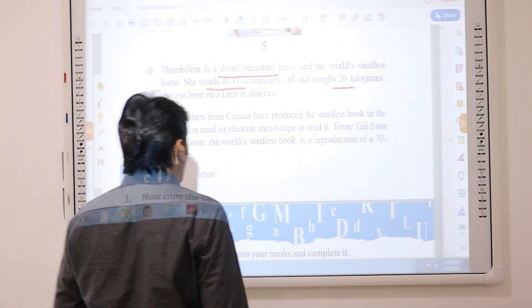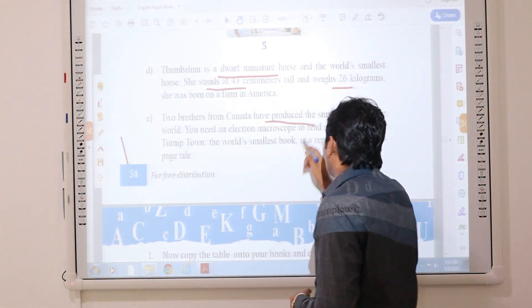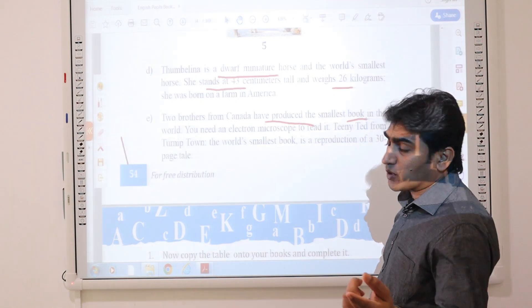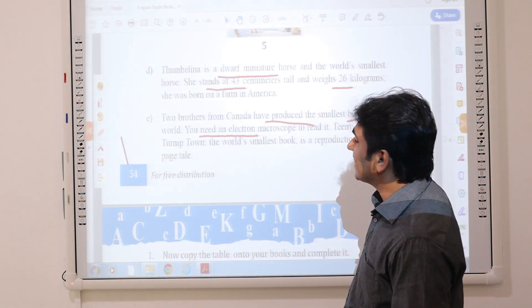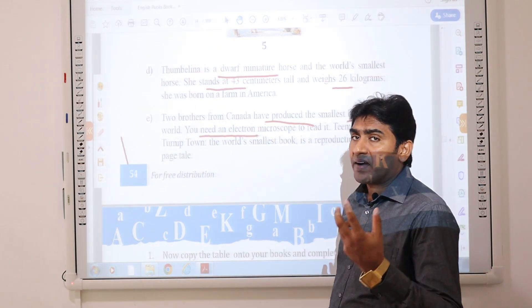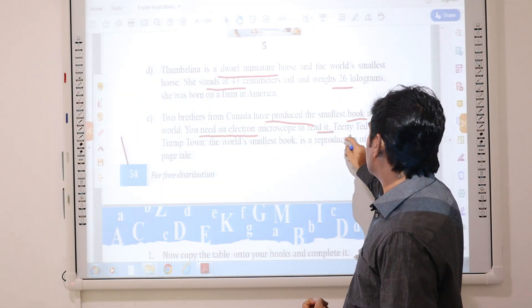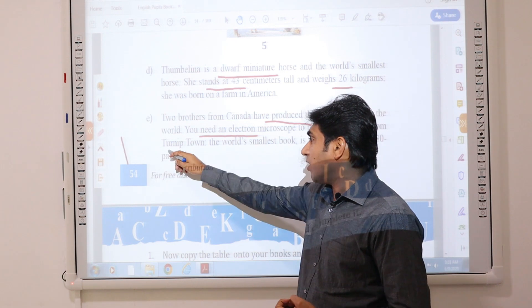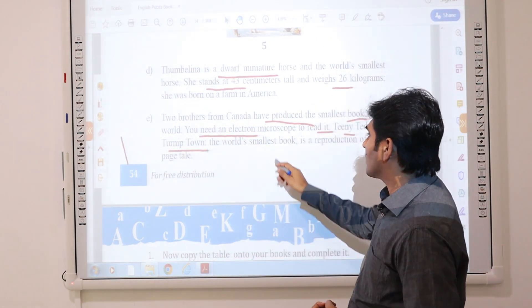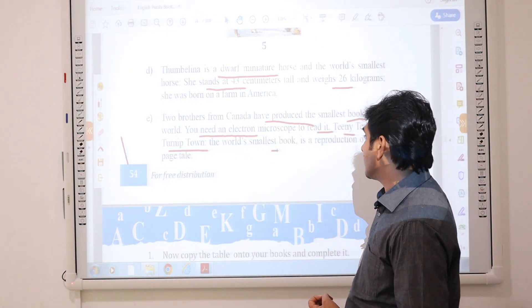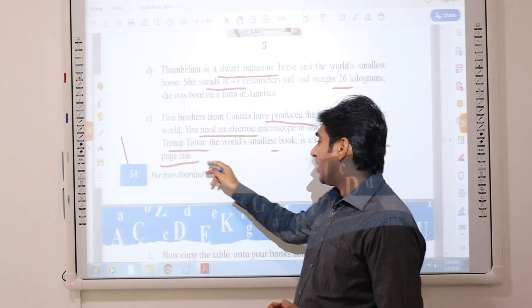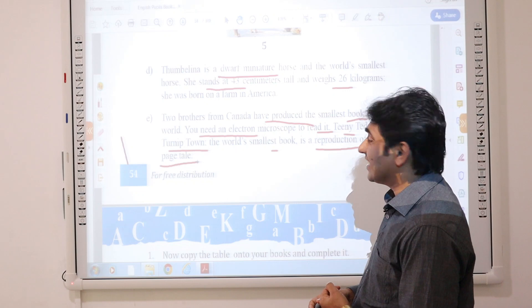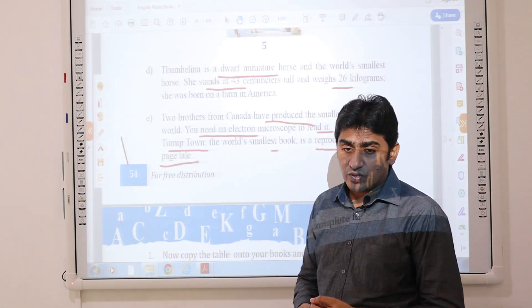Two brothers from Canada have produced the smallest book in the world. You need an electron microscope to read it. Tiny Ted from Trump Town. The world's smallest book is a reproduction of a 30-page tale. You can see.